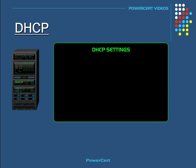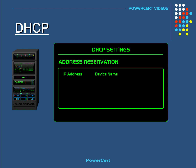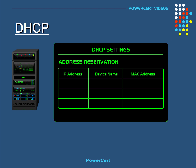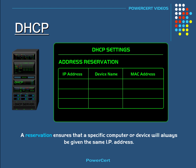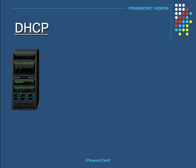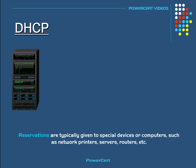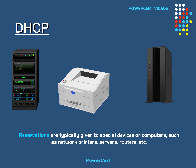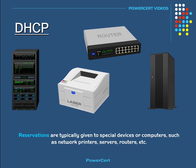If you want a computer or device on your network to have a specific IP address all the time — in other words, you never want that IP address to change — you can create a reservation on the DHCP server. A reservation ensures that a specific computer or device, identified by its MAC address, will always be given the same IP address when it requests one from the DHCP server. Reservations are not typically given to regular computers; they are typically given to special devices such as network printers, servers, routers, etc., because devices like these should be given the same IP address constantly.